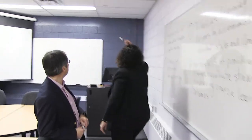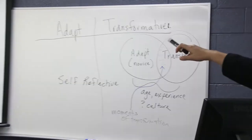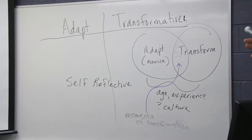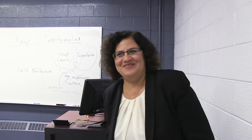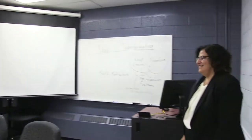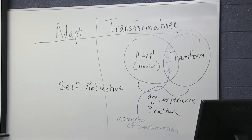Around whether we're working to help students and learners adapt or be transformative, or a combination of the two. I like the way you've drawn that Venn diagram and isolated the moments of transformation, because that's very consistent with my own belief and understanding of how that might happen.